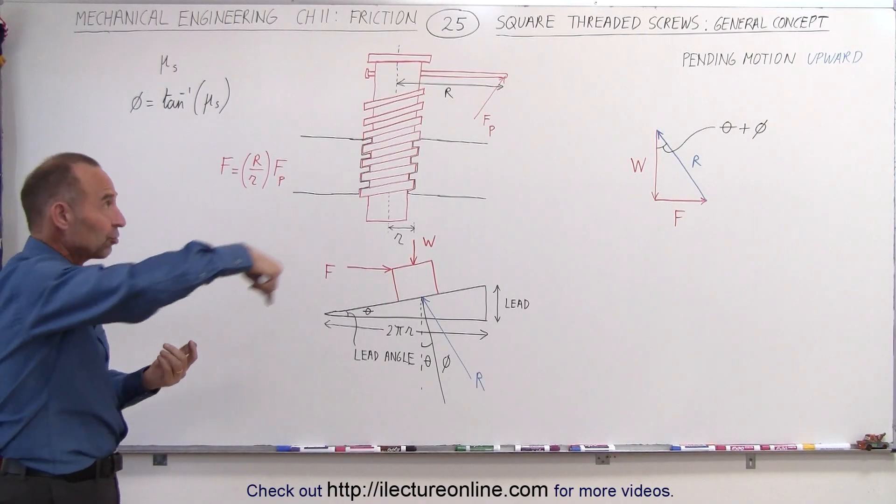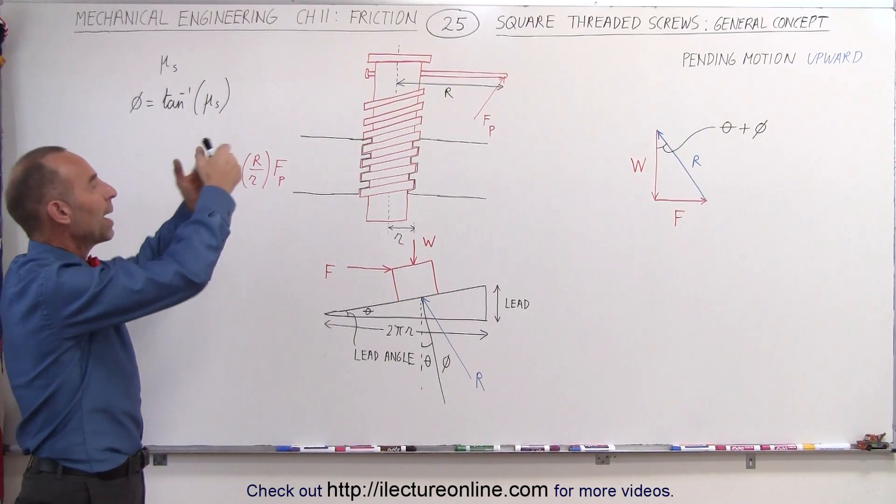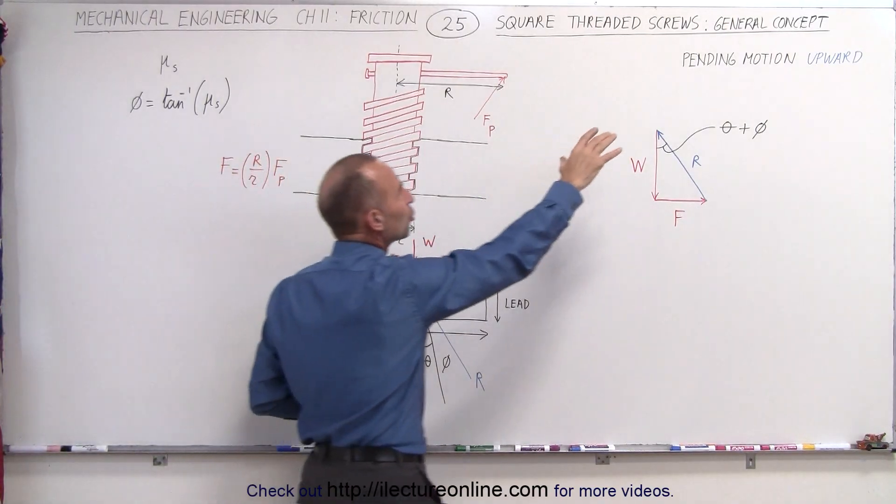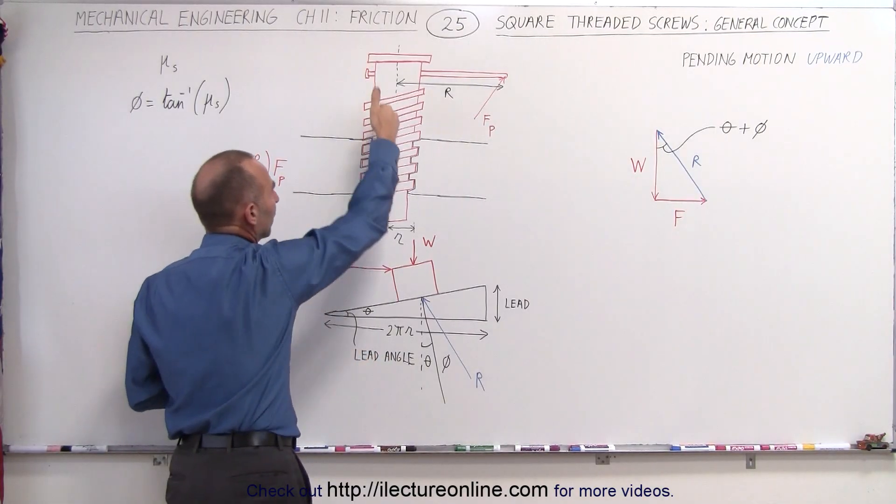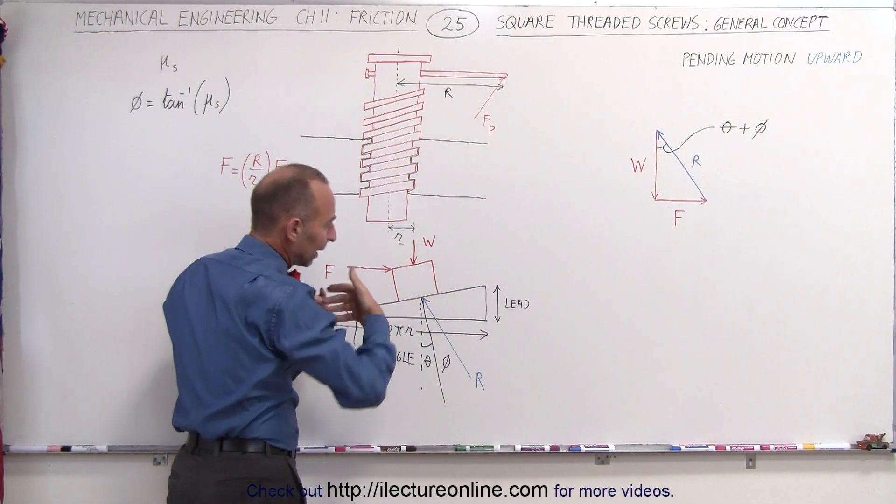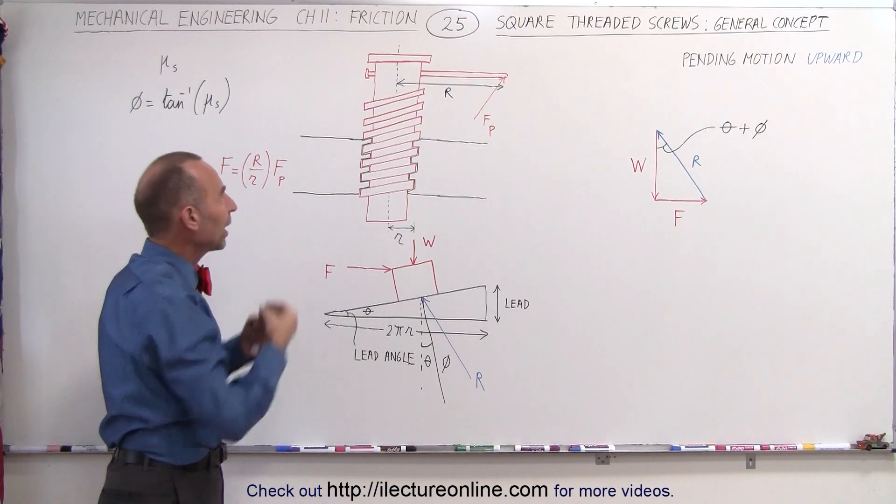What we're trying to do is turn it counterclockwise so that the screw will come out, so we have pending motion upward. And the way we look at it is that the screw will have a certain amount of weight pushing down. That could be because it's holding something down or simply using the weight of the screw.